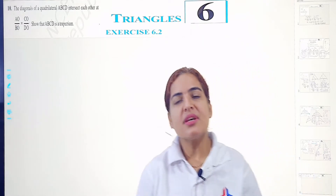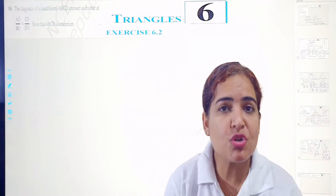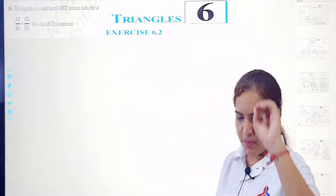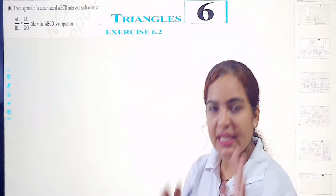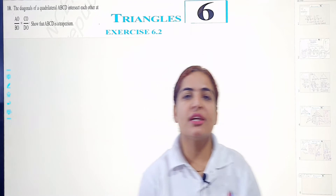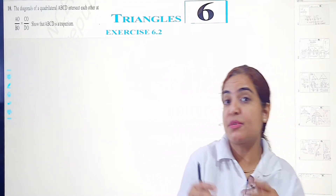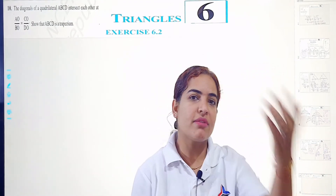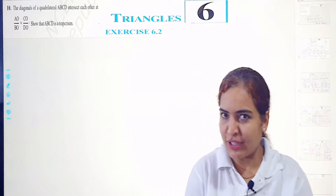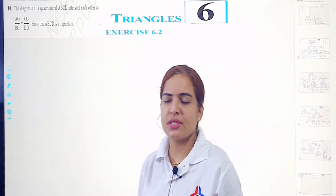We are just talking about the same topic: similarity, proportionality, or proportional. When there are sides, how are the triangles similar? And when there are sides proportional or equal, how are the given sides parallel? So we are talking about all these questions now.